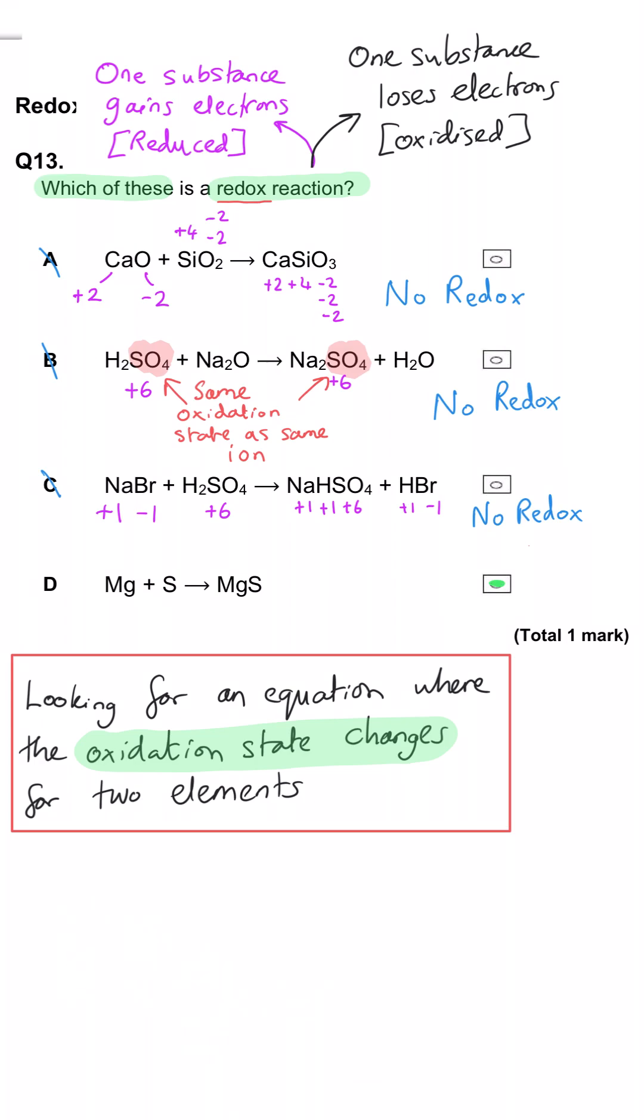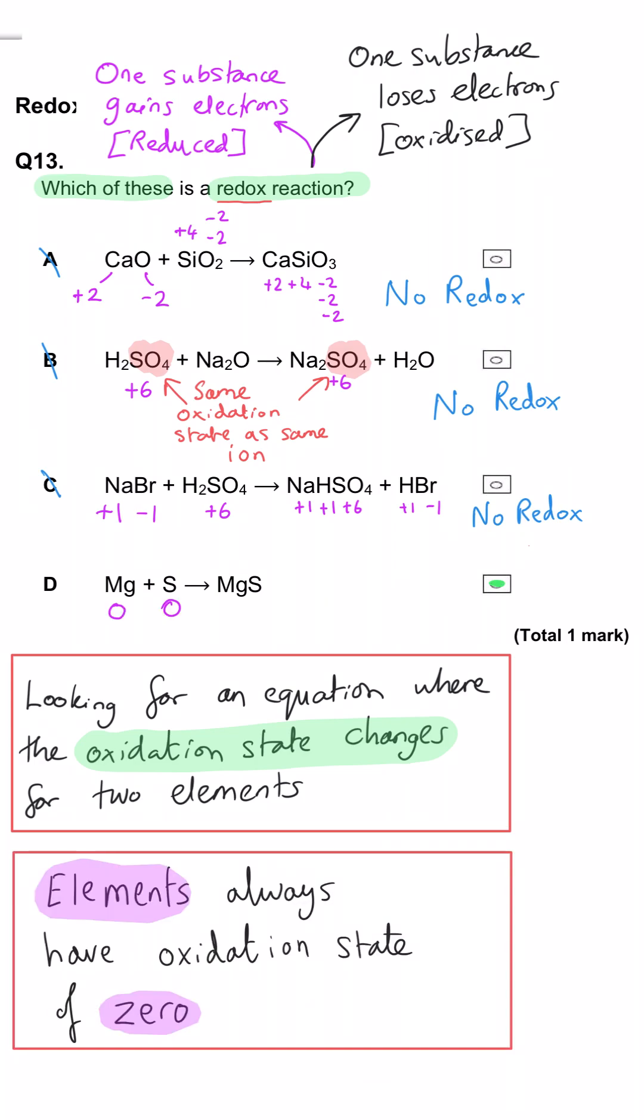And so D must be the correct answer. Magnesium starts with an oxidation state of 0 and goes to plus 2. Sulfur starts at 0 and goes to minus 2.